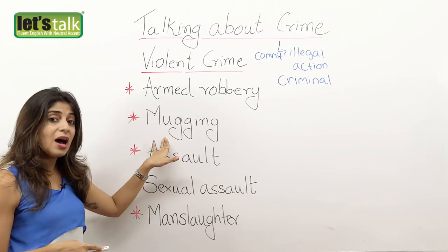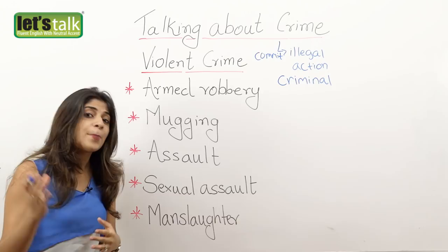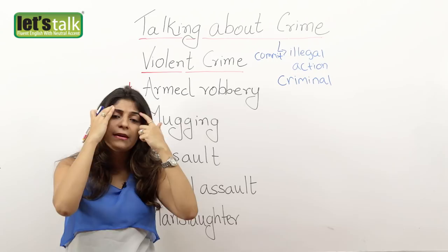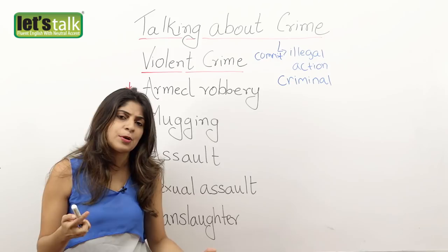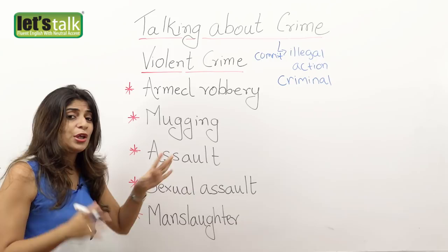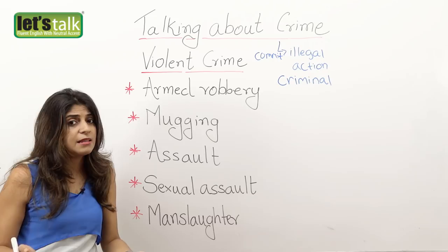The next one is mugging. Mugging is a very quick, violent robbery on a person, and it usually takes place in a public place. For example, a person is walking and a biker comes and assaults that person in a violent attack, stealing their wallet, watch, or rings. That is called mugging. You can say there were three muggings in our vicinity in the past one week.